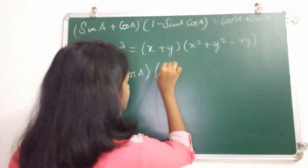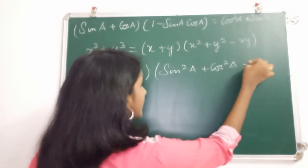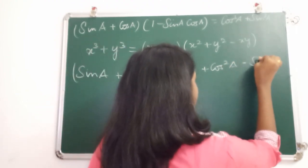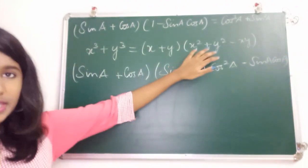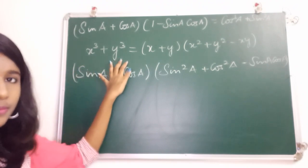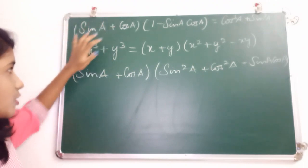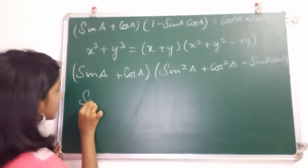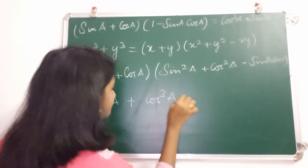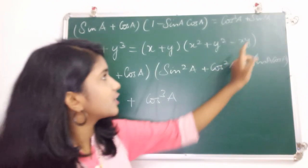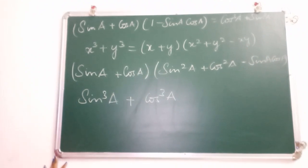So (sin A + cos A) into 1 can be written as (sin A + cos A) into (sin²A + cos²A minus sin A cos A). This is now in the form of x³ + y³, with x as sin A and y as cos A, giving us sin³A + cos³A. This matches the LHS, completing the proof.